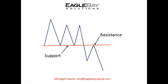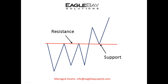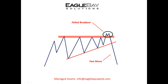So just a couple of quick principles — this is where it all begins: support and resistance. What we call polarity — what was former support should turn into resistance. That's technical analysis 101. Former support turns into resistance; where there were buyers, there should be sellers; where there was demand, there should be supply. Same thing the other way around — where there was resistance, once we break out, any retest should be met with support. If that support doesn't show up, that was definitely a failed breakout.